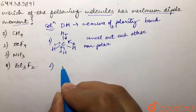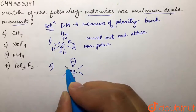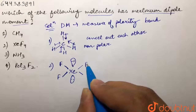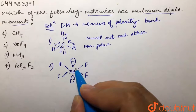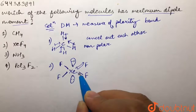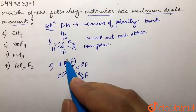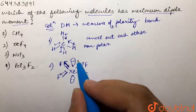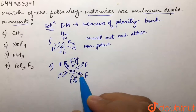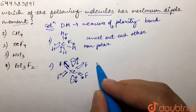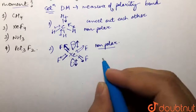Second, we have XeF4. XeF4 has xenon with eight valence electrons making four bonds with four fluorines, leaving two lone pairs. Fluorine is more electronegative than xenon, so the bond dipole direction is towards fluorine. All bonds are the same, so opposite bond dipoles cancel each other out, and the lone pair dipoles also cancel. Therefore, XeF4 is also a non-polar molecule.